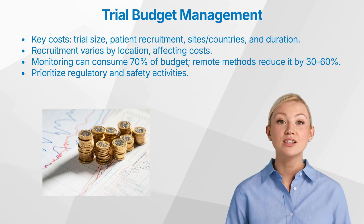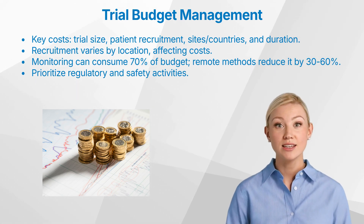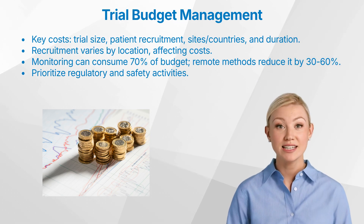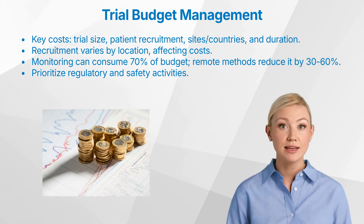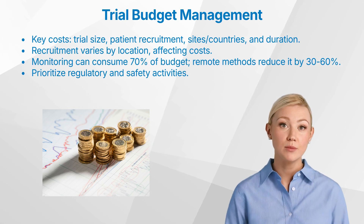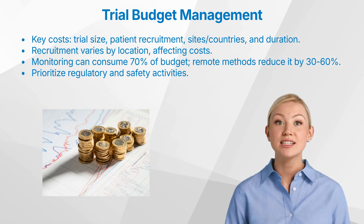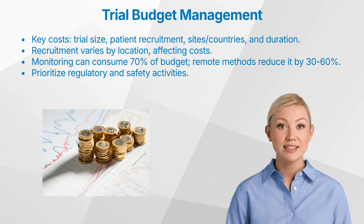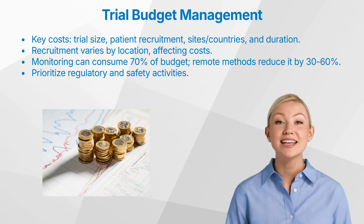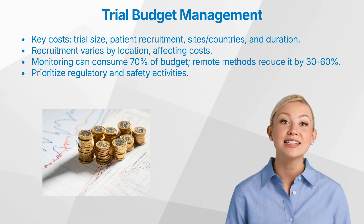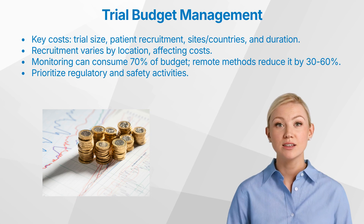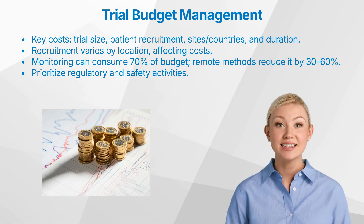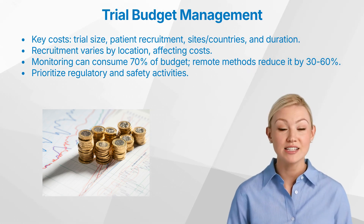Now that you're aware of what drives the costs, let's talk about how to allocate resources efficiently. Every task in a clinical trial has a cost, so it's vital to allocate funds carefully. Monitoring, for example, can consume up to 70% of your entire budget. One way to manage this is by integrating remote monitoring methods, like centralized statistical monitoring, which can reduce costs by 30 to 60%. And don't forget about regulatory and safety activities, which are essential for compliance and need to be prioritized in your budget.